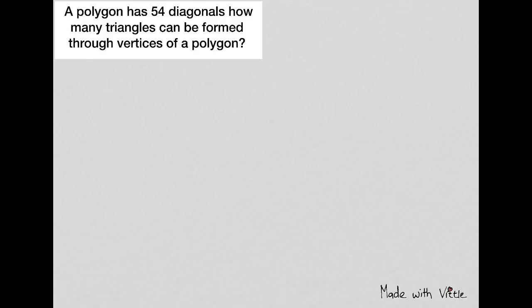We already know that the number of triangles is always 2 less than the number of sides. Let us write it down. The number of triangles is equal to n minus 2, where n is the number of sides.